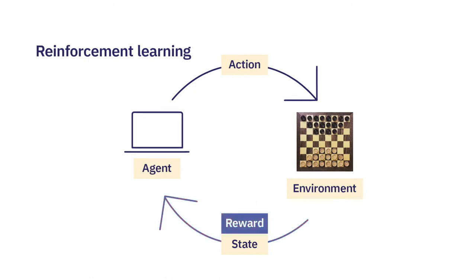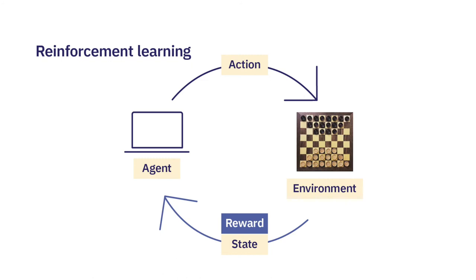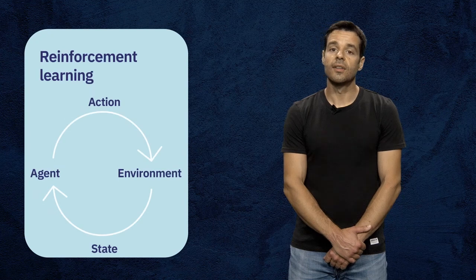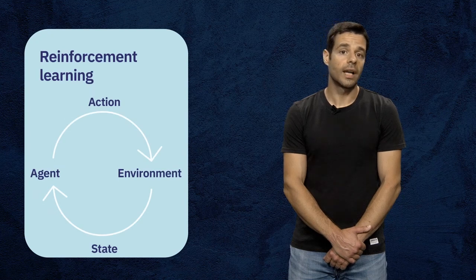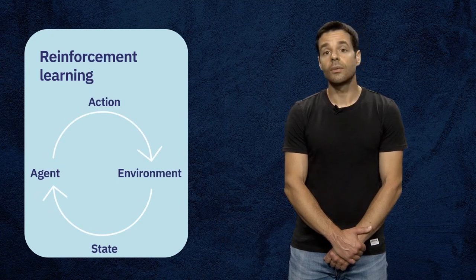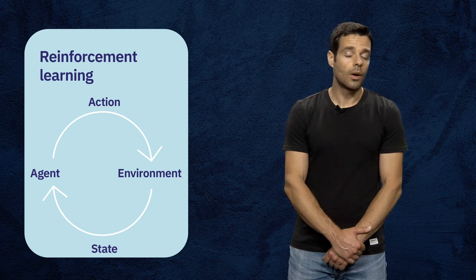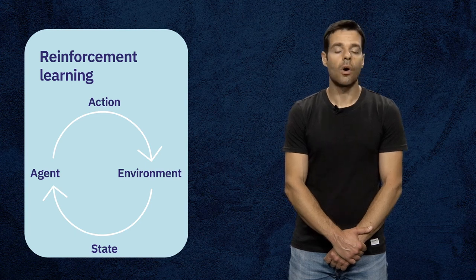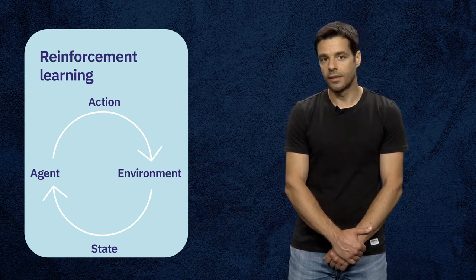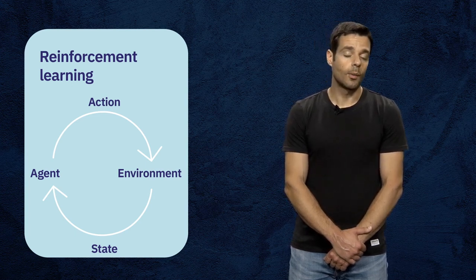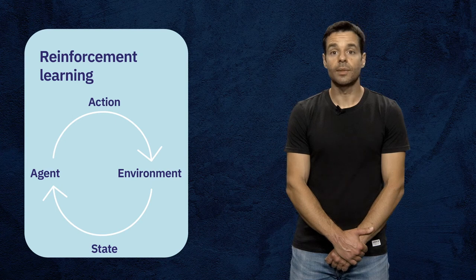It is based on this dynamic between actions, states, and rewards that the computer learns how to play. Naturally, the system is designed to look for actions that result in positive rewards, since a positive reward is like an award for a good decision. This is the type of problem that reinforcement learning seeks to solve.